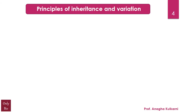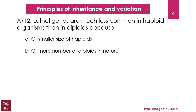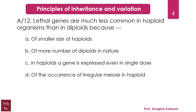Question number 12 also relates with Principles of Inheritance and Variation and also with Chromosomal Basis of Inheritance. The question is: lethal genes are much less common in haploid organisms than in diploids because — options: A, of smaller size of haploids; B, of more number of diploids in nature; C, in haploids a gene is expressed even in single dose; D, of the occurrence of irregular meiosis in haploids. The correct answer is C — in haploids a gene is expressed even in single dose.